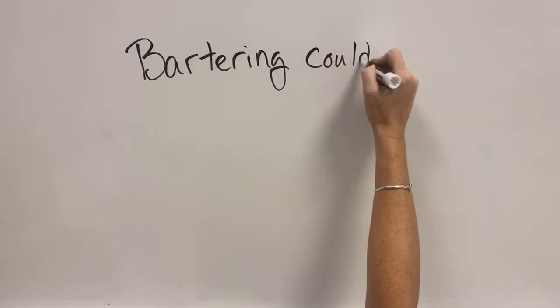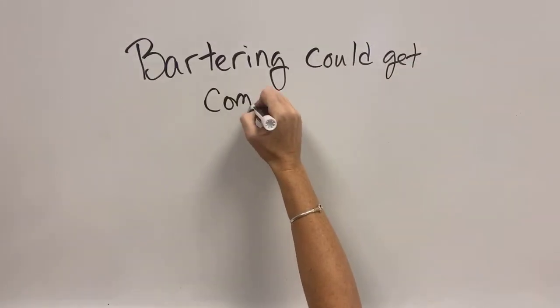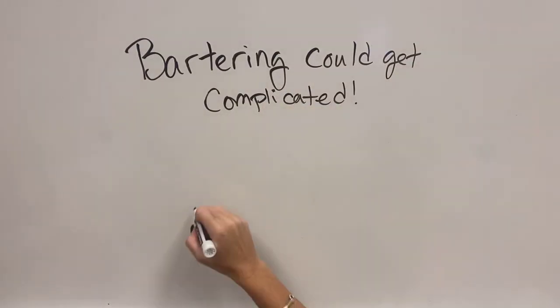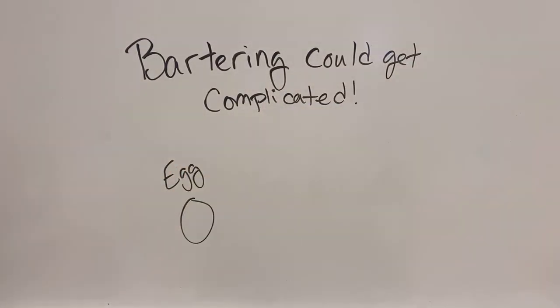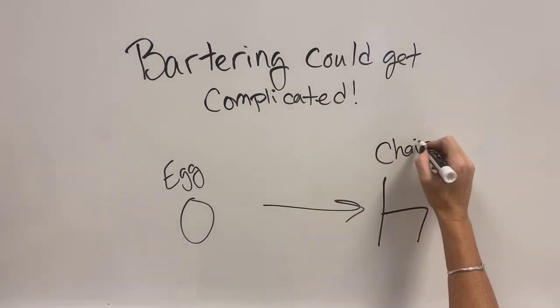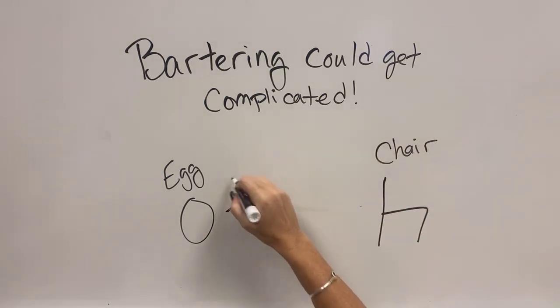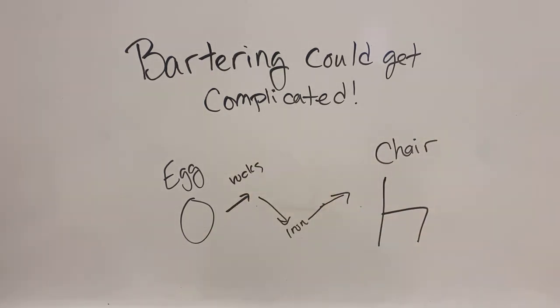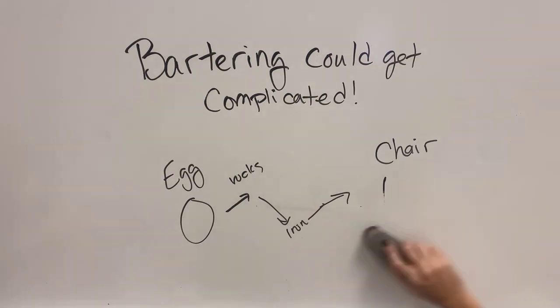So much work, right? Bartering could get very complicated. And we would have to take an egg, and in order to get a chair with some eggs, I would have to get some rocks and some iron and then the chair.